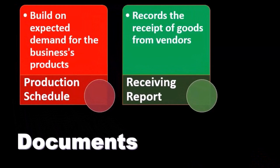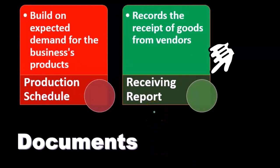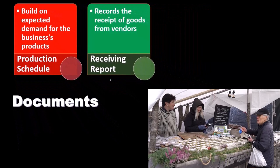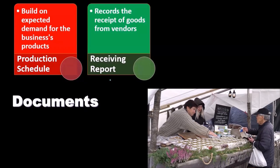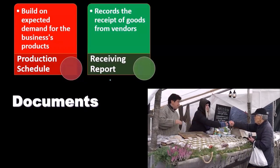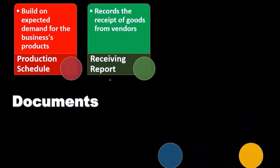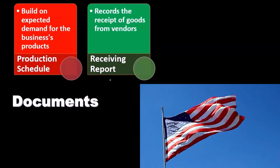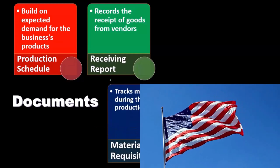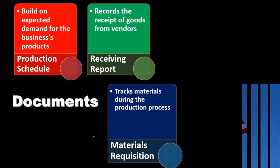The receiving report records the receipt of goods from the vendor. We discussed this in the purchasing process because the purchase of inventory is one of the things we may purchase. We can think of it basically at the warehouse — when we receive the goods, that's the point we put together the receiving report.